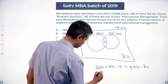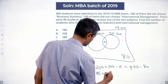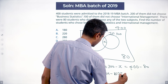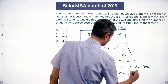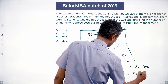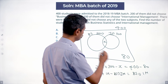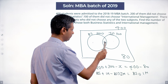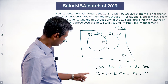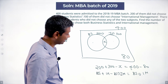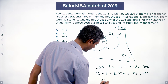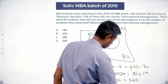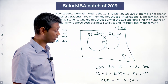Business statistics plus international management minus the intersection of business statistics and international management equals the union of business statistics and international management. This union equals 400 minus 80, applying the formula A plus B minus A intersection B equals A union B. So 200 plus 300 is 500. 500 minus x equals 320, therefore x equals 180.